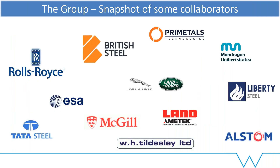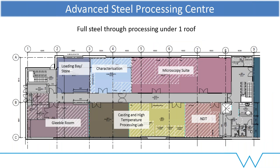We work with loads and loads of companies — you can see just a select few here. These range from primary steel makers all the way down to end users or subsidiary companies, going from casting to automotive to forgings and the likes. We're quite fortunate — we've got a building all to ourselves. If any of you are able to come and visit, we'll give you a tour in the order of what we make steel in. We start off with casting and high temperature processing.